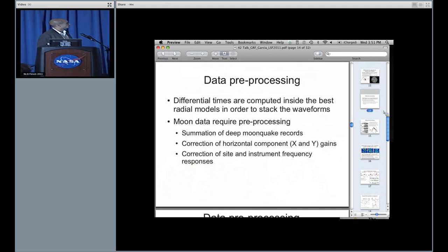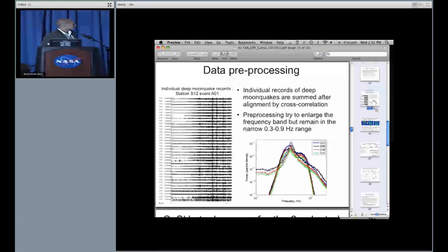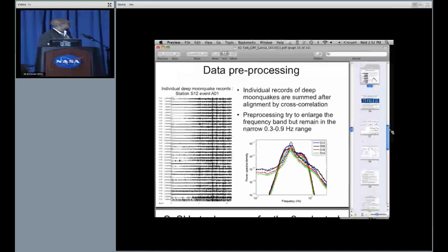I will not detail the pre-processing of these Apollo seismic data, but there is a lot of work to do. In particular, these deep moonquake records repeat with the tide, and so you have to stack the deep moonquake records in order to enhance the signal-to-noise ratio. I will recall you only these two plots to show you how the individual deep moonquake records look in Apollo data, in order to give you an idea of the signal-to-noise ratio and also what is the frequency band. This is the original peak mode for Apollo data, and we try to enlarge a bit the frequency band, in particular to lower frequencies where we expect less scattering from the crust, but we remain in the 0.3 to 0.9 hertz frequency range, which is a very narrow bandwidth.